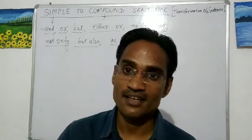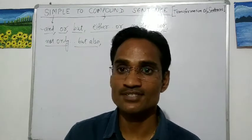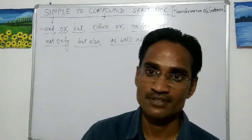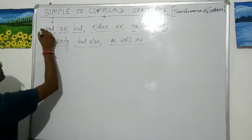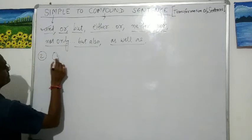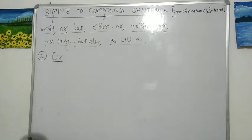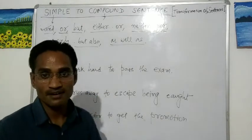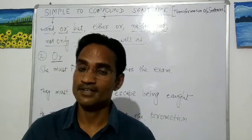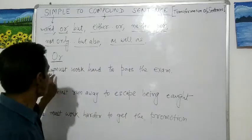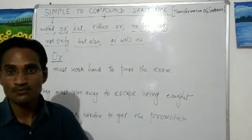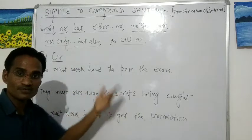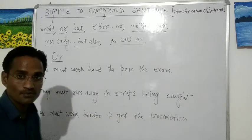Hello and welcome to this e-lecture series. We'll continue the topic of simple to compound sentences. Today we'll start with the next conjunction, which is 'or.' We covered the first conjunction 'and' in the previous video. So let's get started. The conjunction 'or' means 'otherwise' in English. For example: she must work hard to pass the exam.